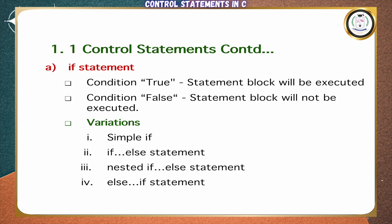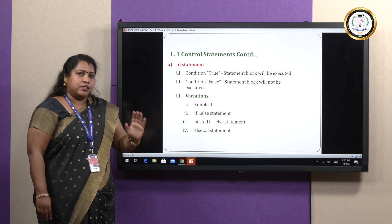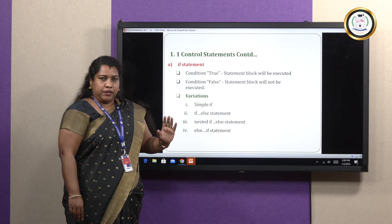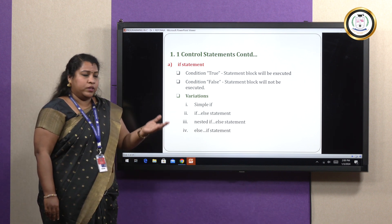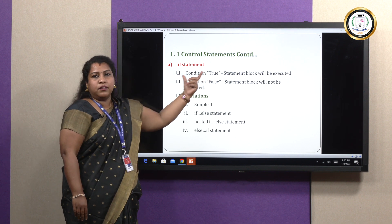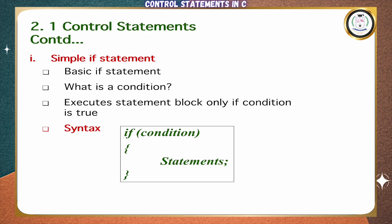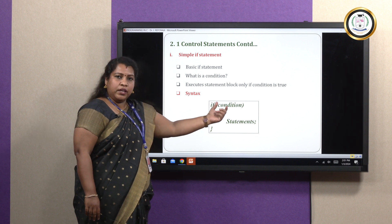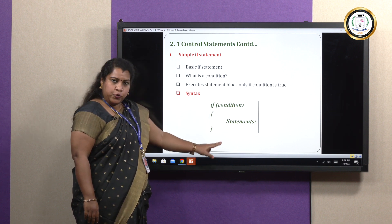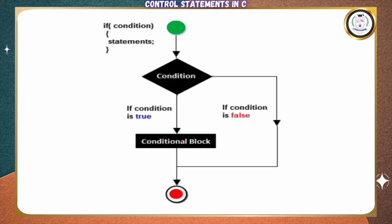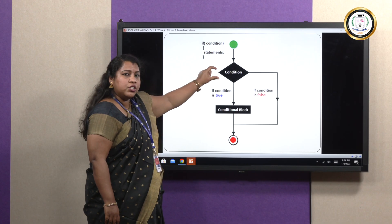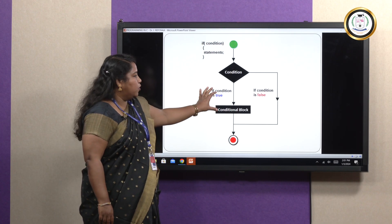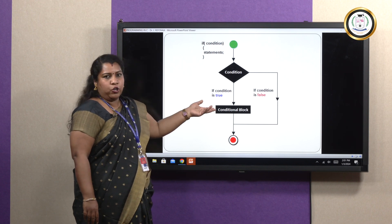In the if statement, we check only the true condition. When an input is given and the condition is satisfied, the statement block under the true branch will be executed. Here is the syntax: 'if' is the keyword followed by the condition. Looking at the flowchart, the input is given to the condition, and if the condition is true, the true block will be executed; otherwise it will not execute.